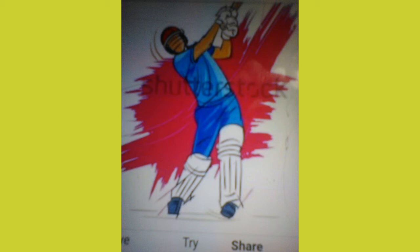16. Extra runs: all the runs given by the fielding team where the batsmen have not hit the ball with the bat are considered as extra runs — for example, wide, no ball, and byes. 17. Innings: a session of batting and bowling where either the batting team is all out or the permissible number of overs to be bowled by the fielding team is completed.